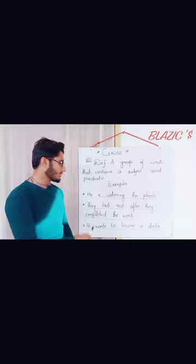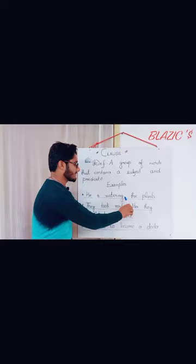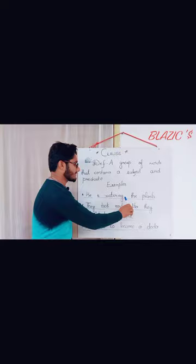For example, he is watering the plants. The subject and the remaining part of the sentence is called predicate. Here, he is the subject, and is watering the plants is the part of the sentence which is called predicate.